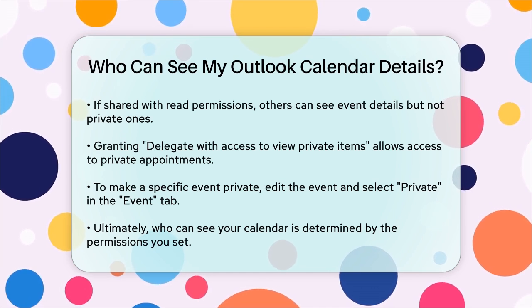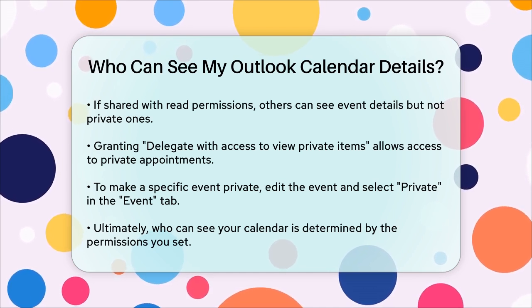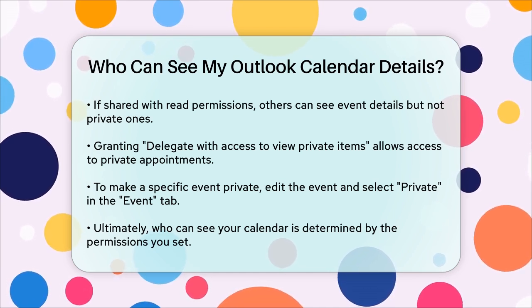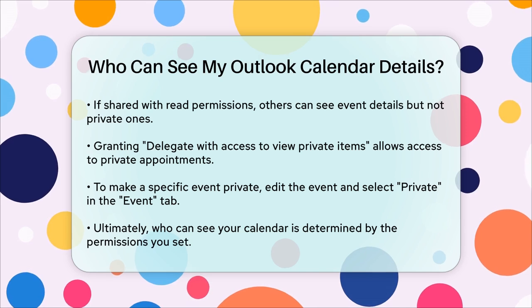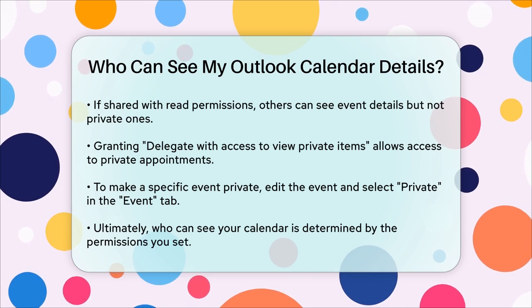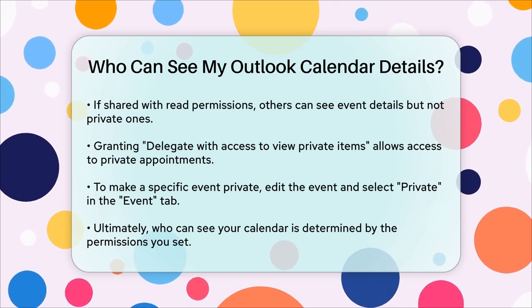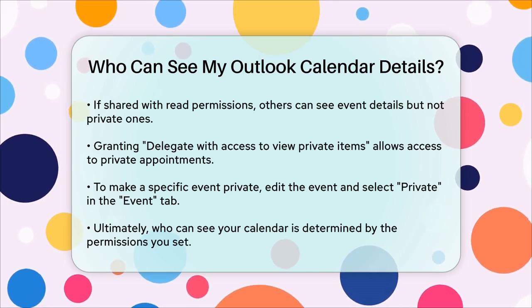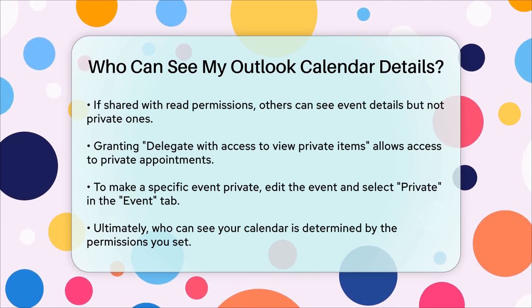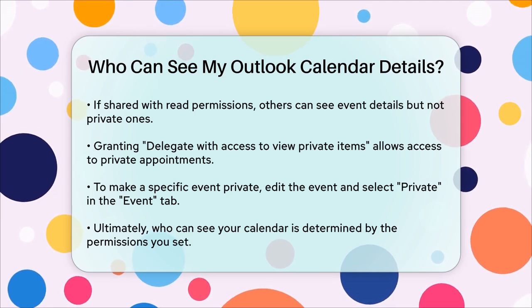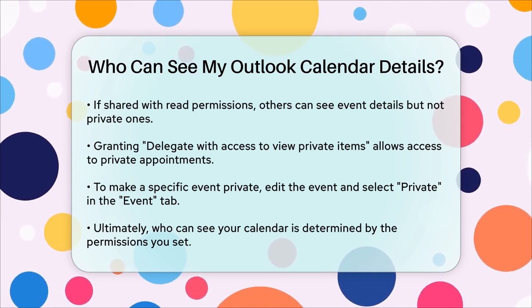So to summarize, who can see your Outlook calendar details depends on the permissions you've set. By adjusting these settings, you can control who has access to your calendar and ensure your privacy is maintained.